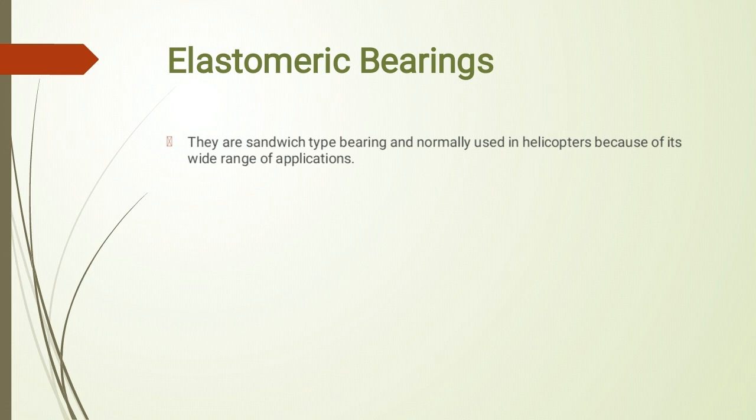Before we understand elastomeric bearing, let's understand what a bearing does. The task of a bearing is to carry and absorb loads. Rotating shafts and rotating components use bearings where load and stress are induced. The bearing carries and absorbs these, and the rotating part's life increases by eliminating friction — that is the work of a bearing.